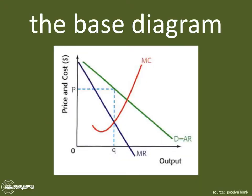Like every diagram in monopoly, we start with the base diagram. It has price and cost with a currency on the vertical axis, zero at the origin, and output on the horizontal axis. Then we draw a descending demand curve, because this is a price maker's market where the monopoly can pick its price point. Demand always equals average revenue, and marginal revenue descends at twice the rate and crosses the horizontal axis.